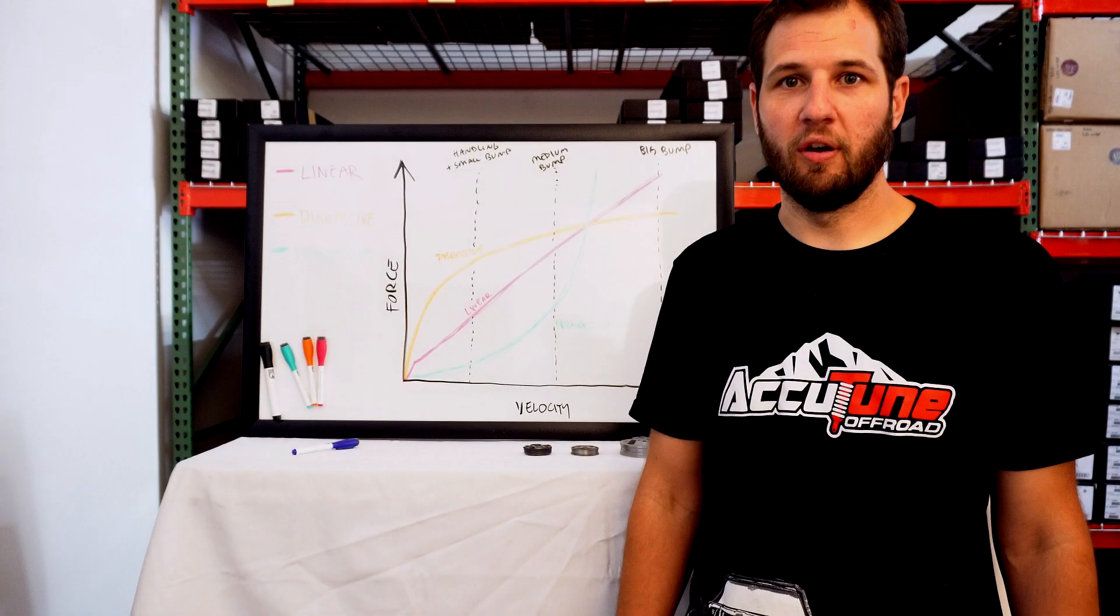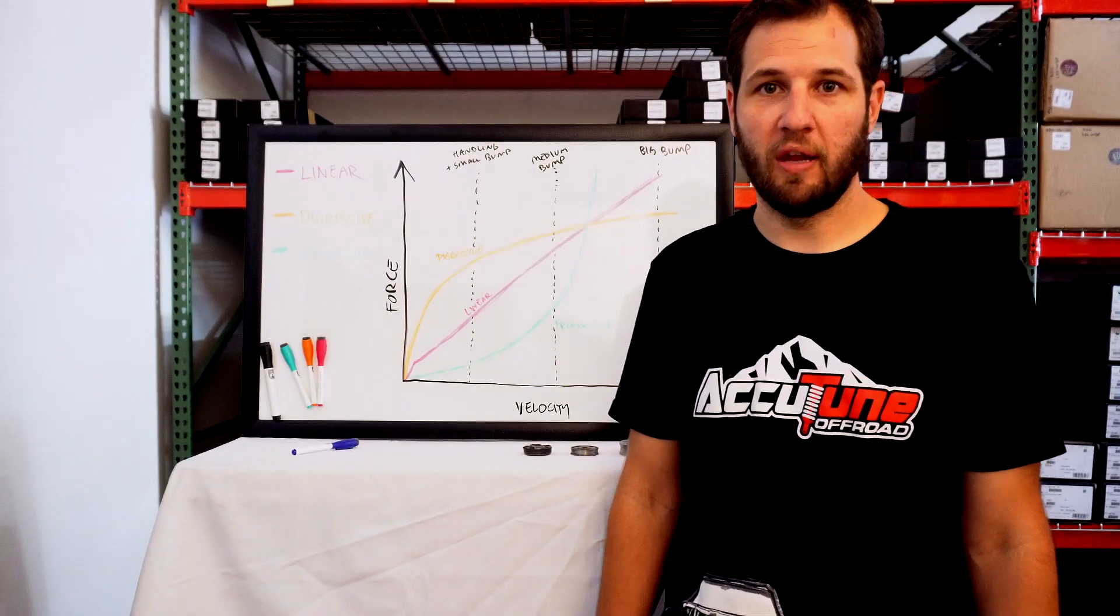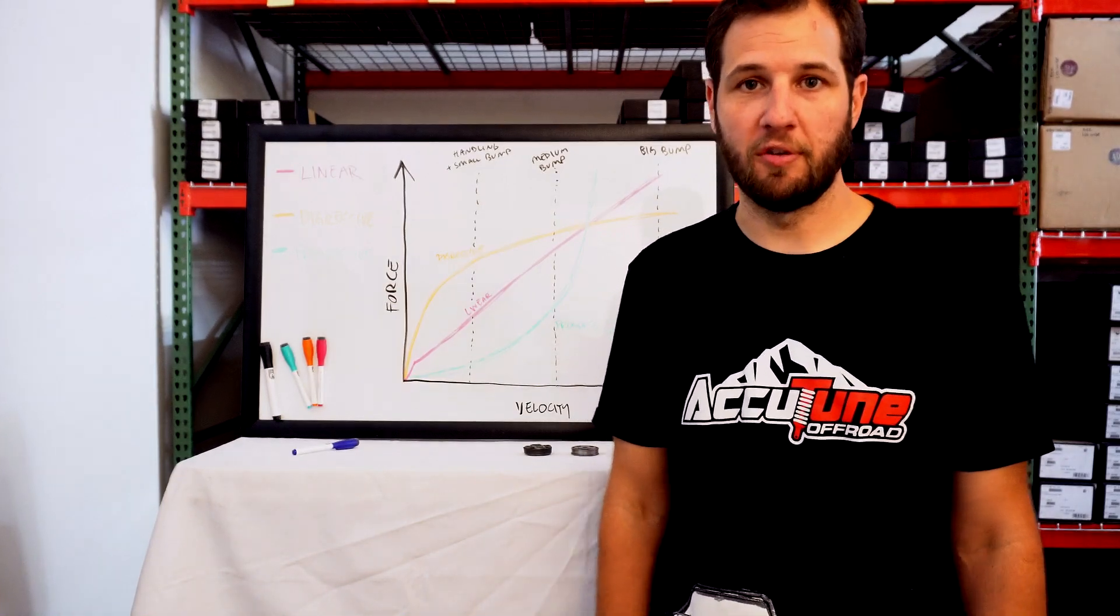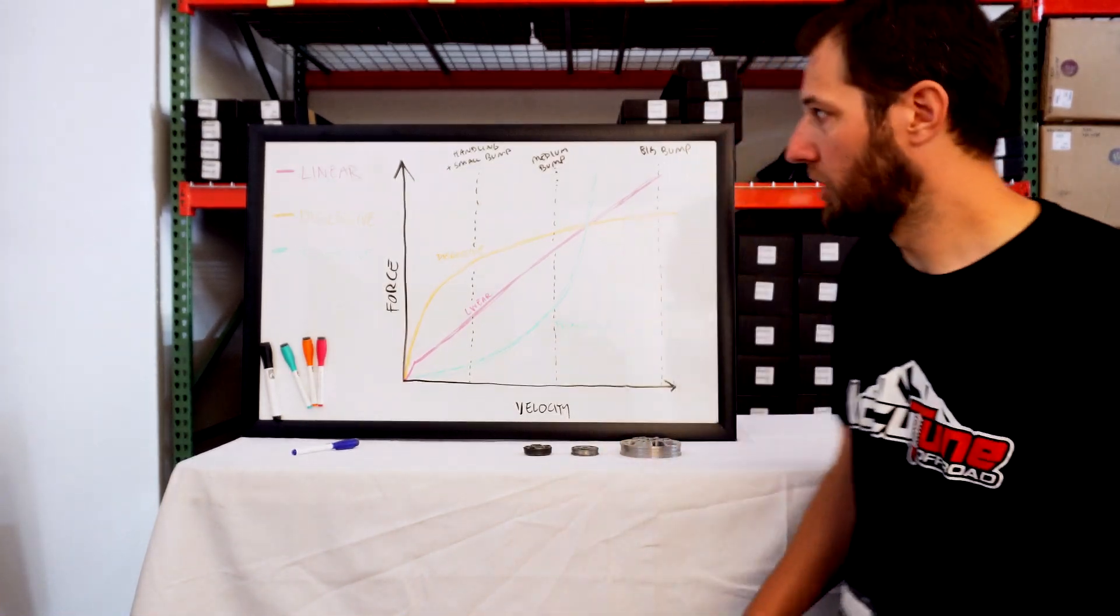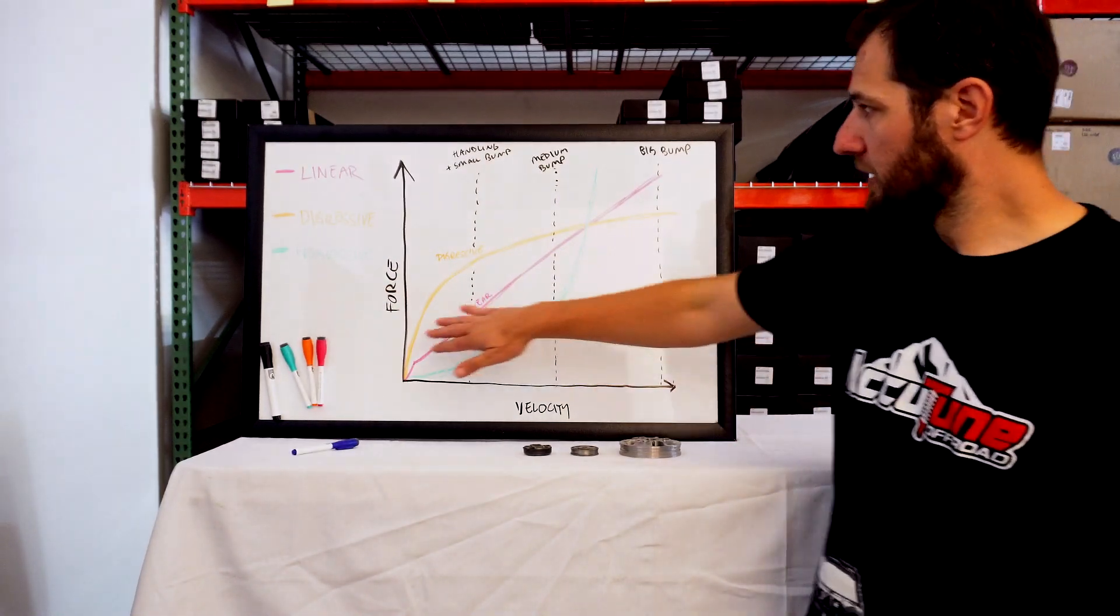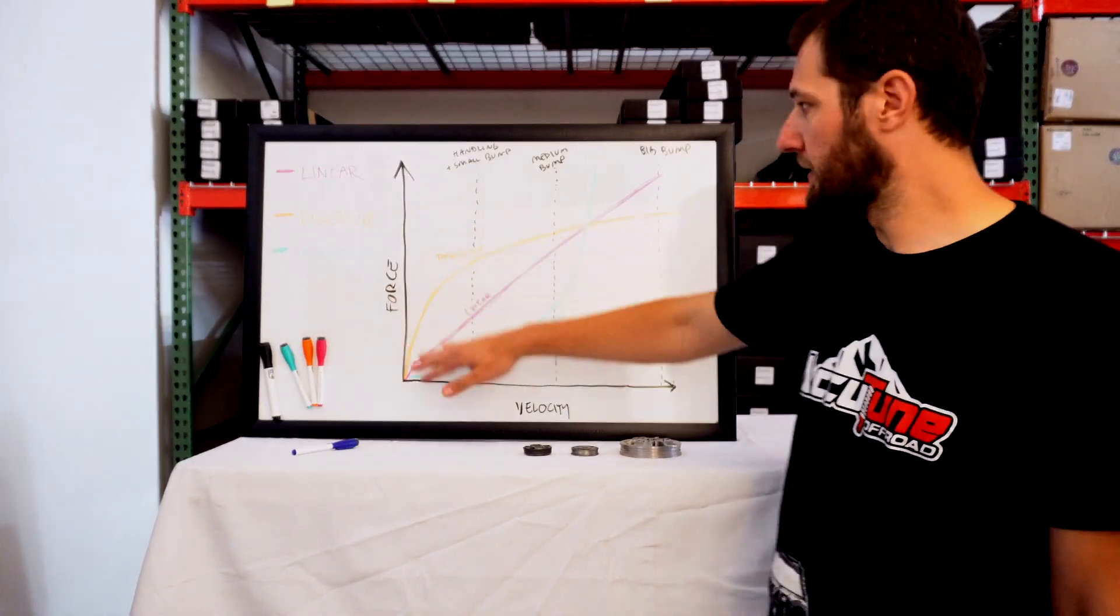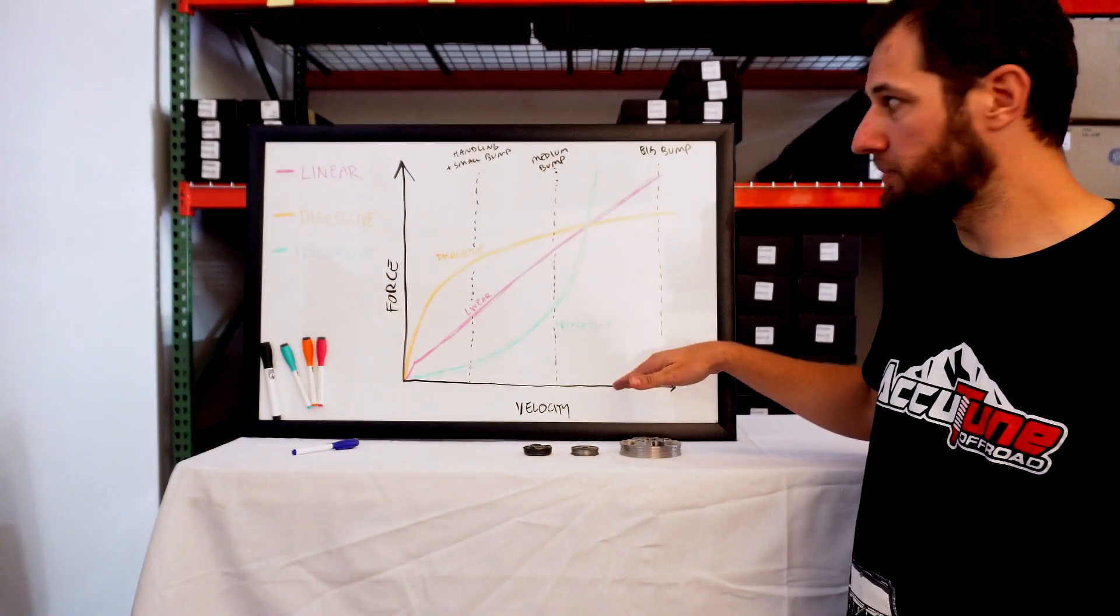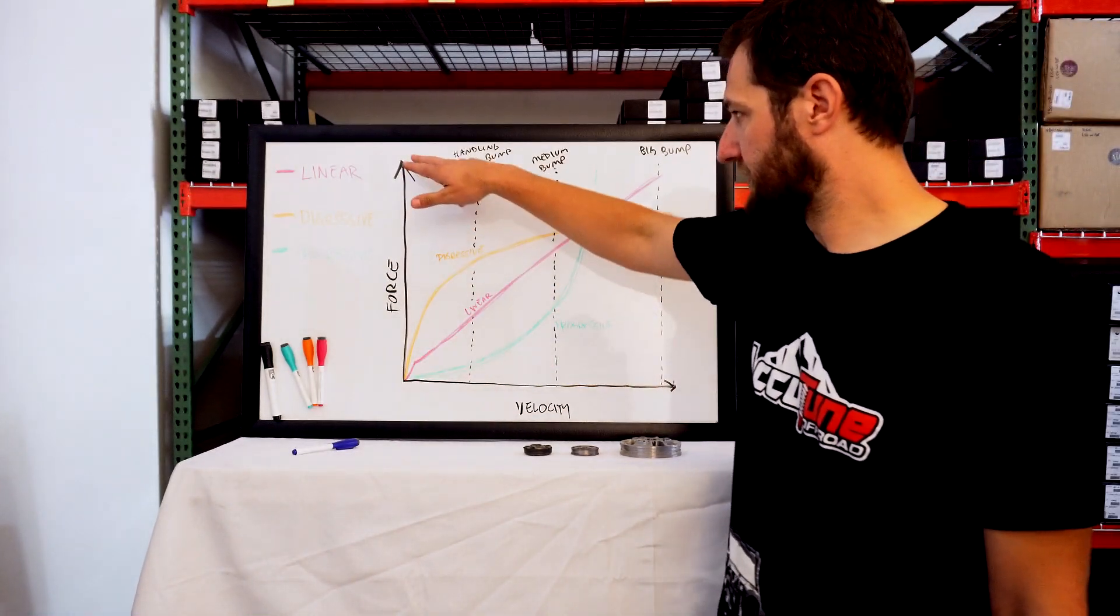Hey, Ryan from Accutune Off-Road here. Today we're going to talk about piston valving and different performance curves that you might experience in your shocks. We're going to start here with a graph to explain how everything works. This is your typical force versus velocity graph that we'll look at with shock absorbers. It gets stiffer as it goes faster.